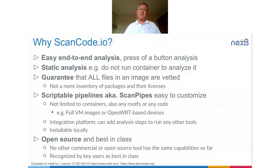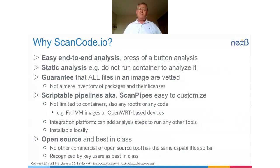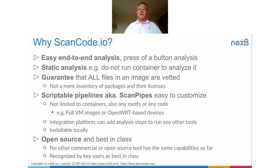We built this with a way to script pipelines — we call these scan pipes — and they're fairly easy to customize. We support Docker images, but we also have pipelines dedicated to analyze a single package, general codebases, full virtual machine images, or OpenWRT-based device root file systems, and it's easy to add, customize, and extend these pipelines. It's installable locally, it doesn't phone home, it's open source, and it's best in class — something you can rely on, customize, and use locally within your own environment.